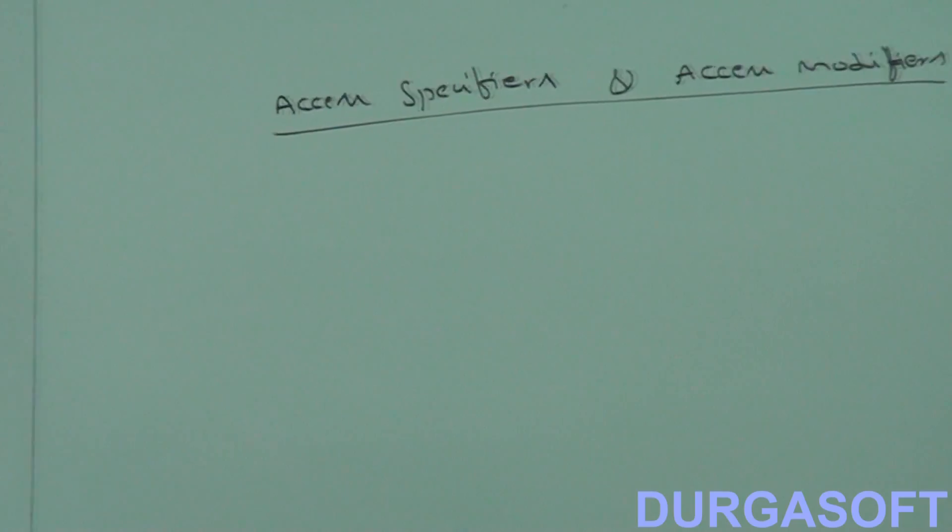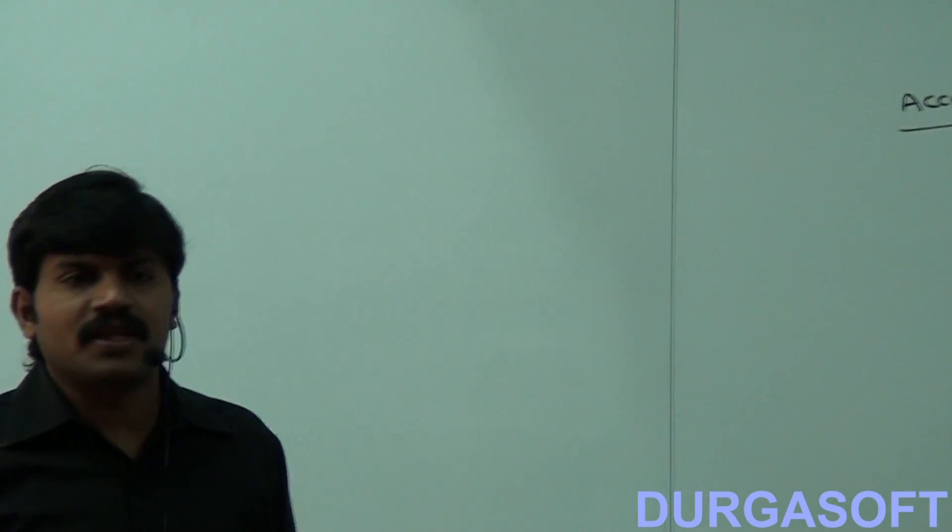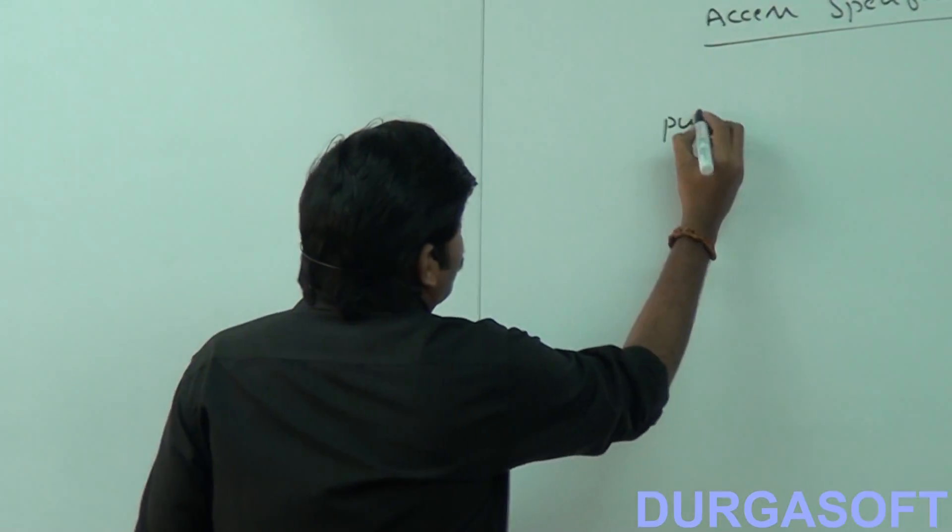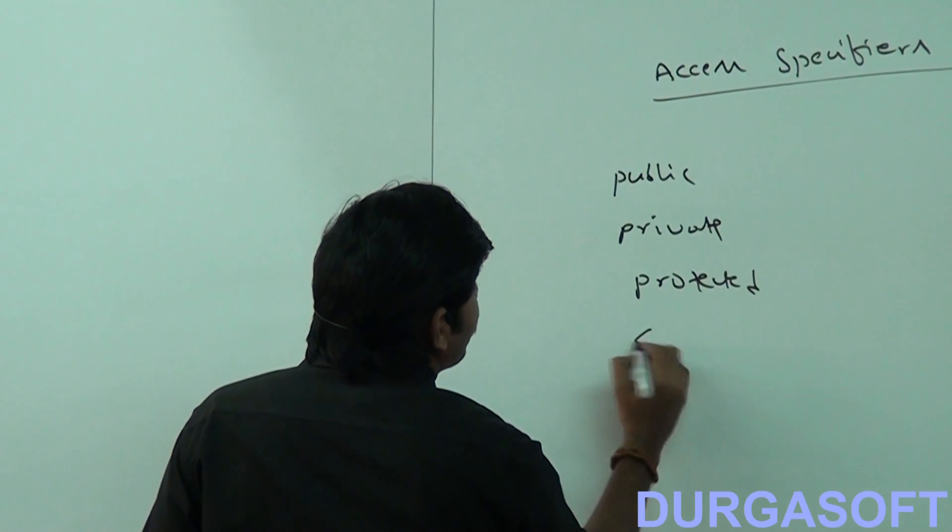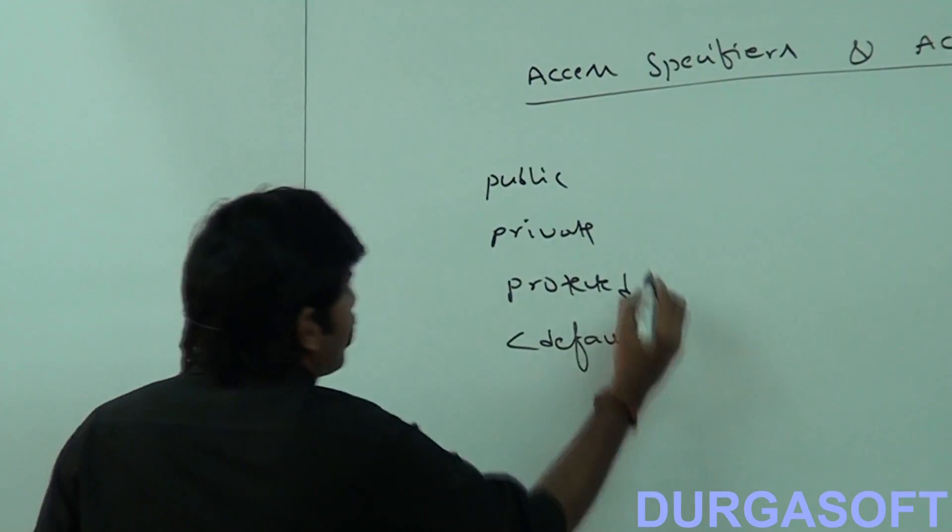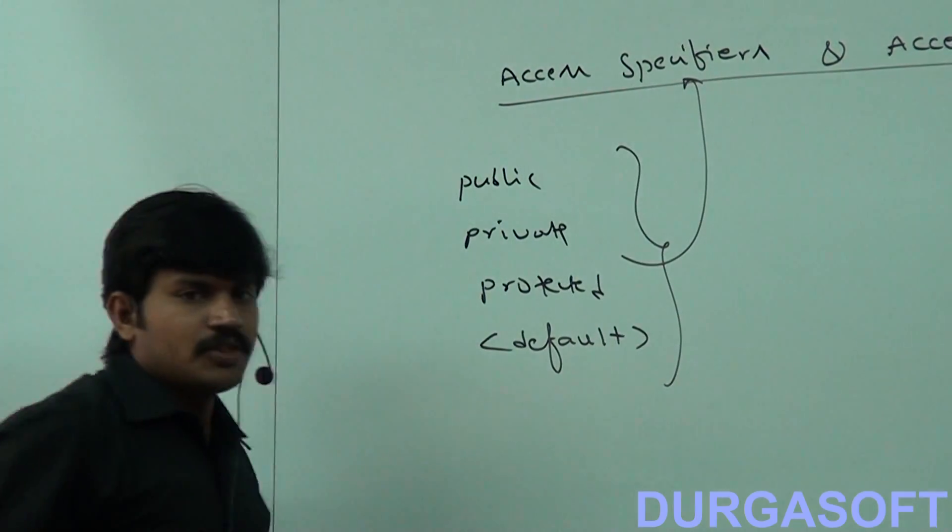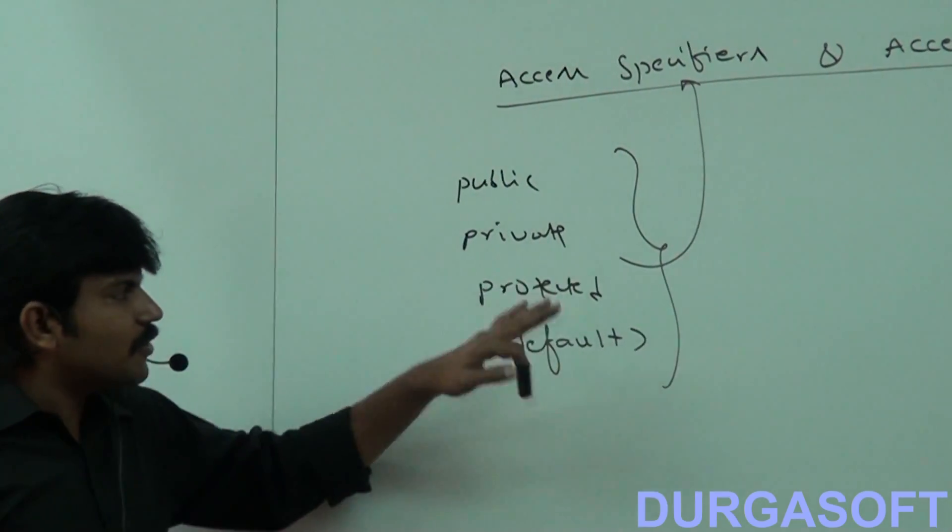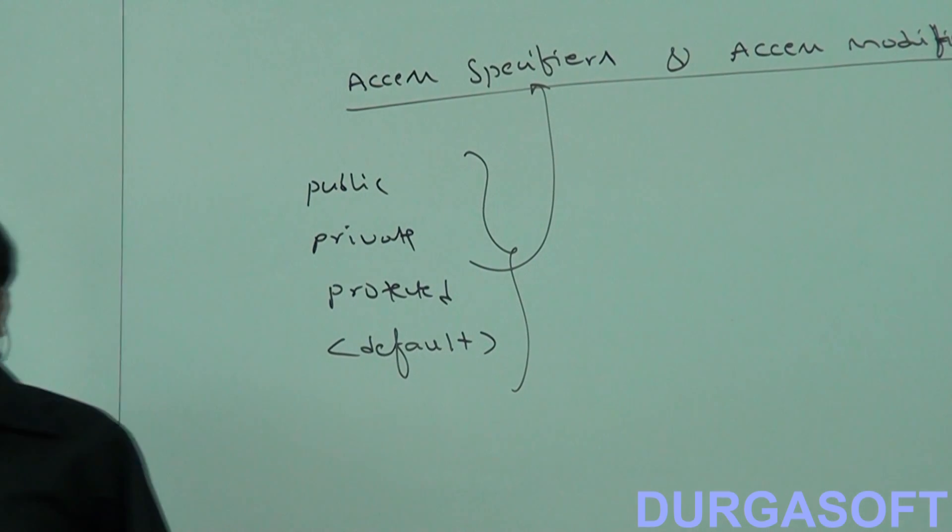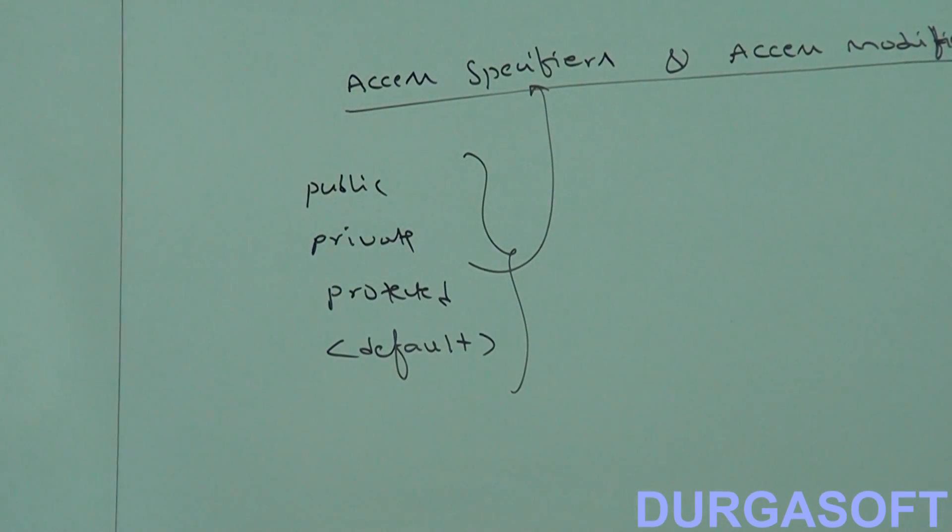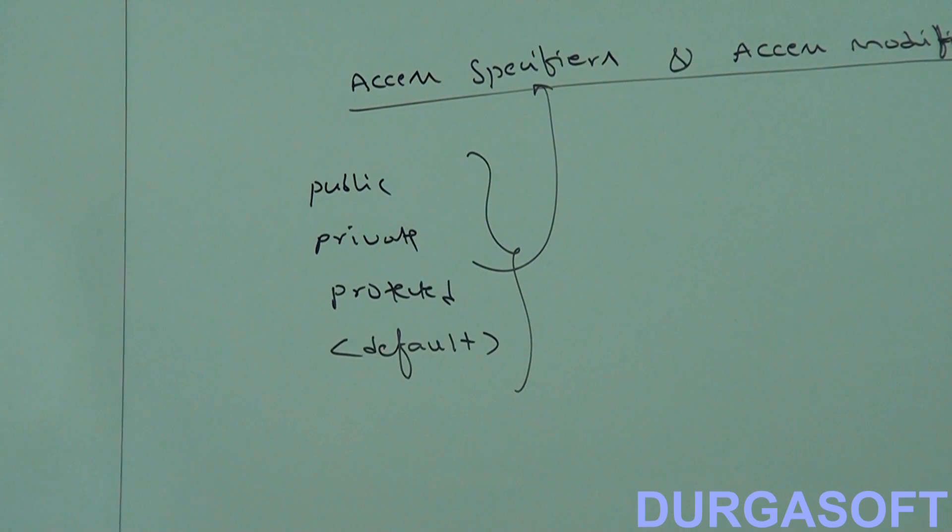If you refer textbooks, websites, or various faculty notices, this is one area where you can see the ambiguity. Some people are going to tell public, private, protected, default - these four are considered as specifiers. And except these, remaining like static, final, synchronized, these things are by default considered as modifiers. This is a type of terminology perfectly valid for old languages like C++, but not in Java.